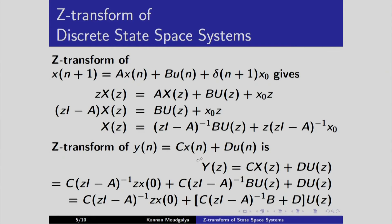Here is the final expression for the Z transform of the state space equation: Y(z) as a function of U(z) and the initial condition x(0) = x₀. Note that x(0) and x₀ are interchangeable.